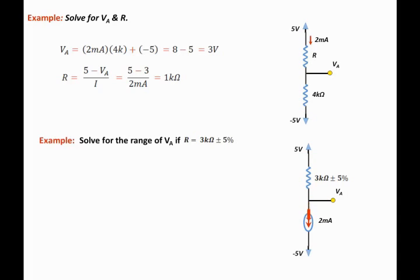Later on in this course we will learn how to implement those current sources using transistors. Transistors are devices that we will study also later on in this course. The value of this current source is constant and it flows through the 3 kilo Ohm resistor. The resistor has 5% tolerance.